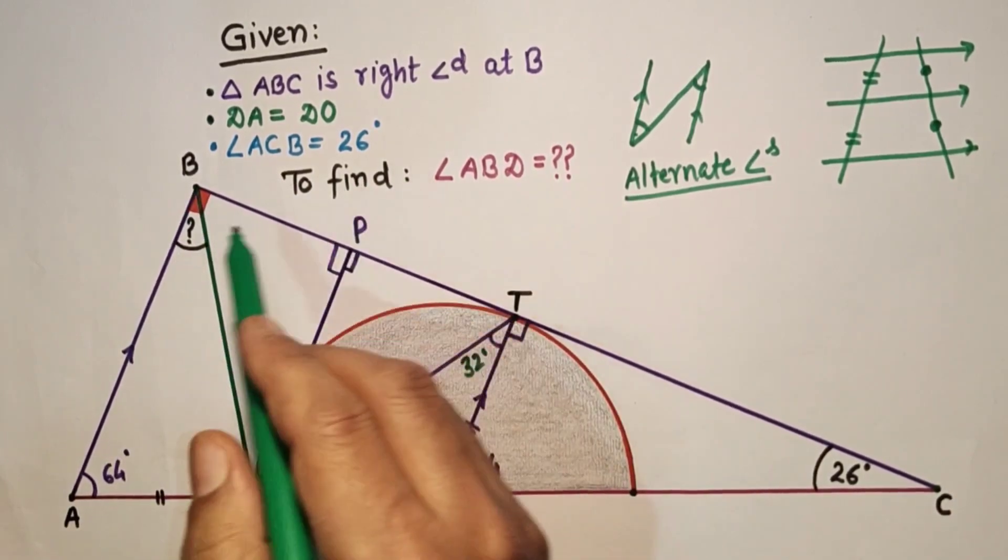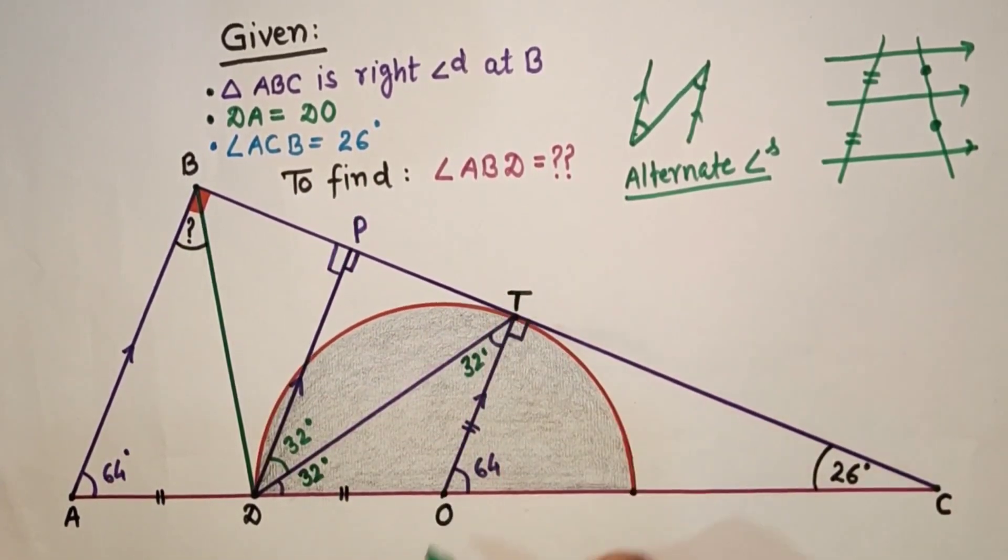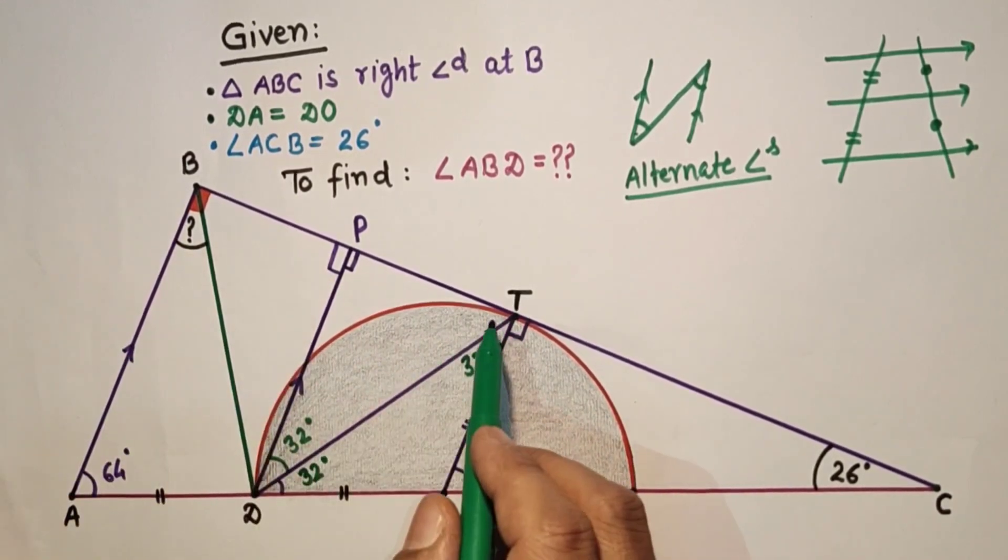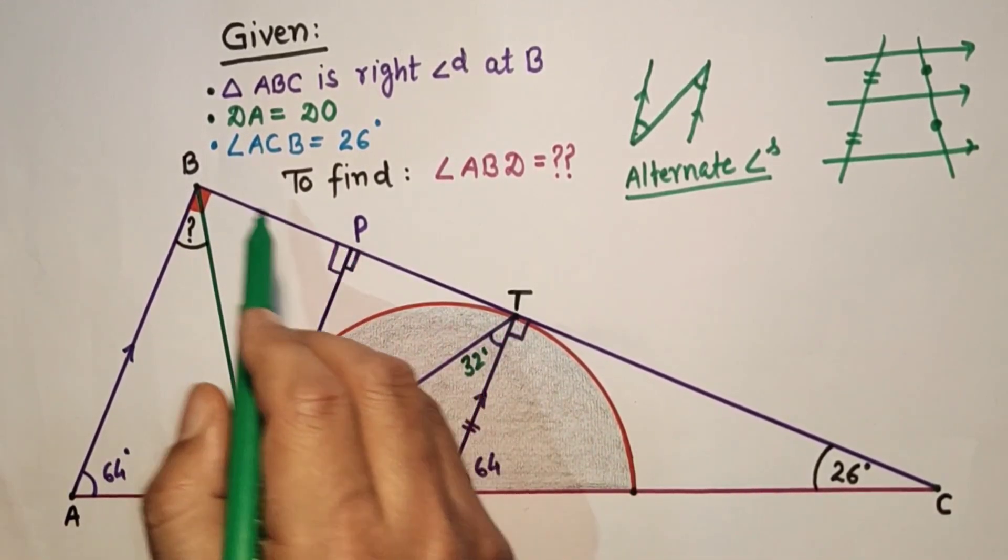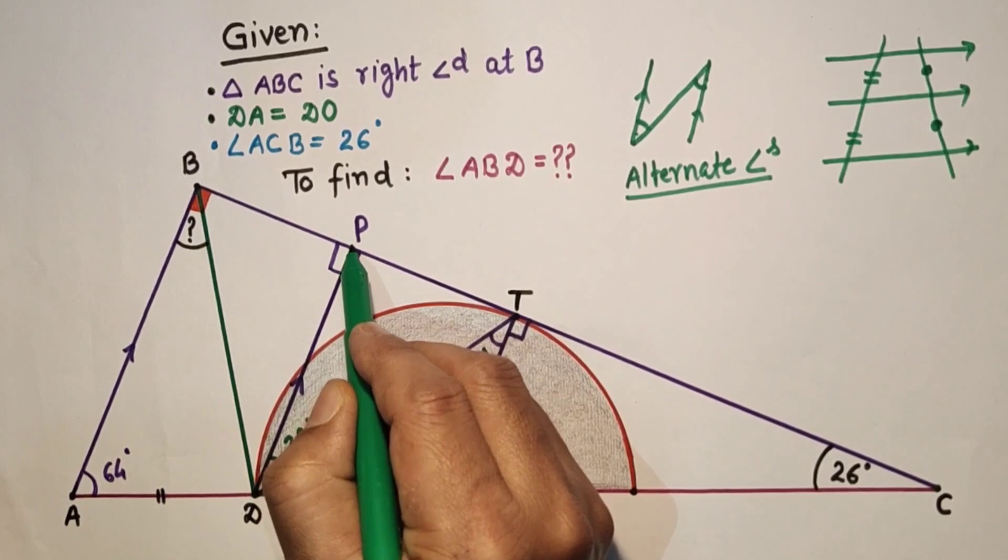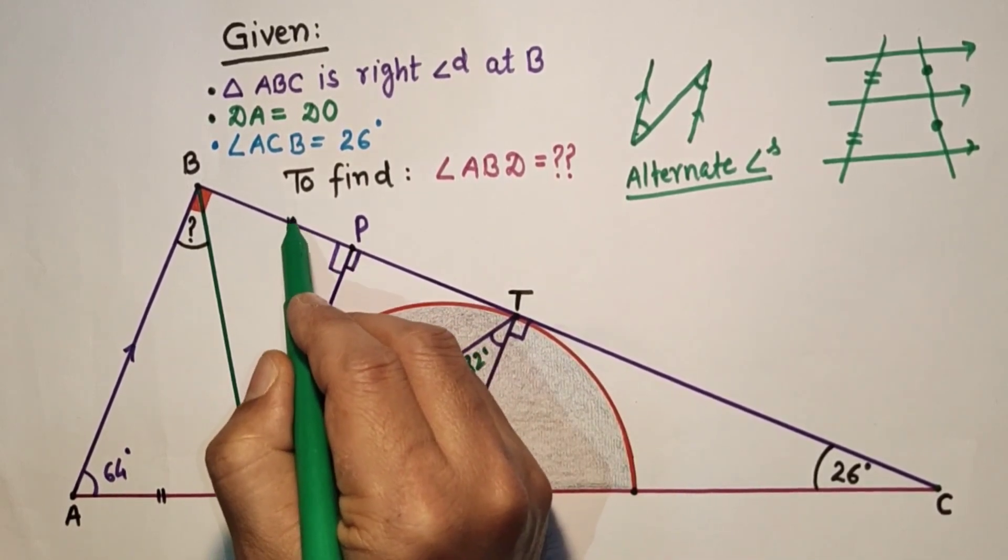These three lines BA, PD, TO are parallel, and this OD is equal to DA. This is transversal, so this transversal TP is equal to PB. So this P point will be midpoint of BT.